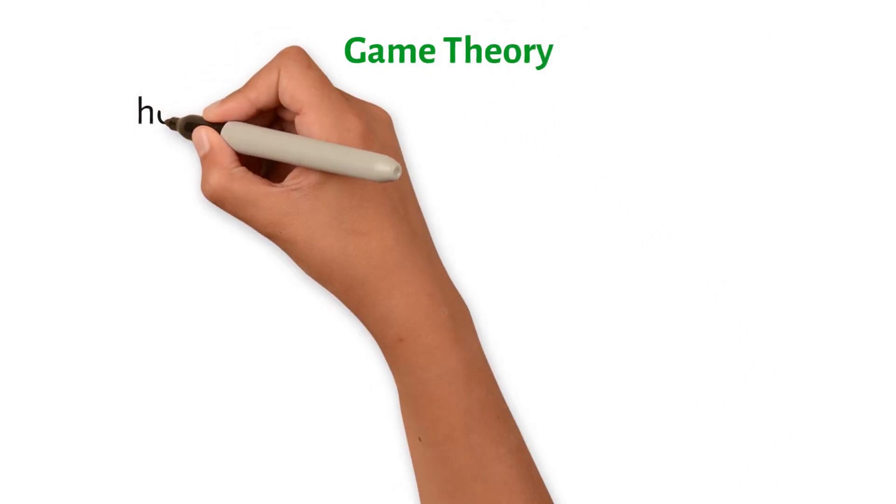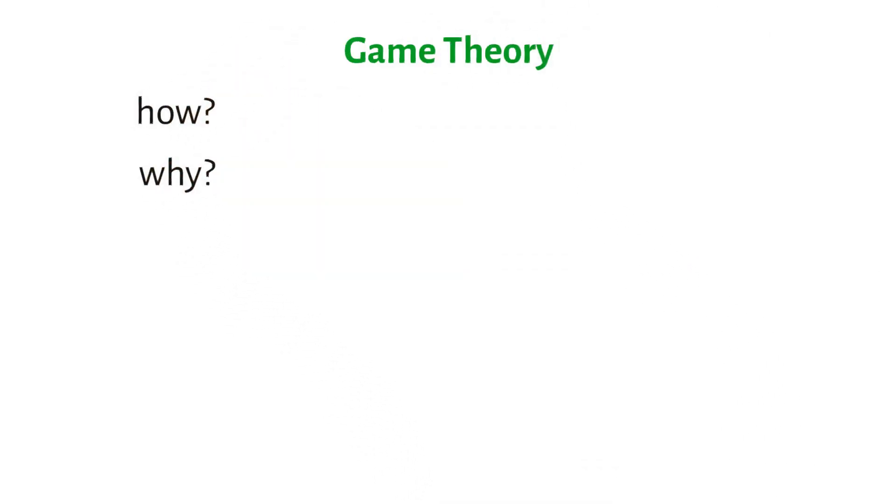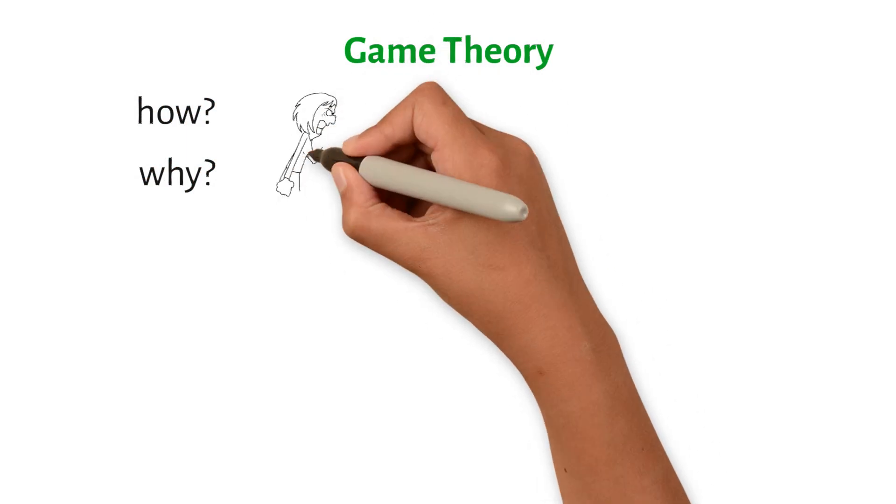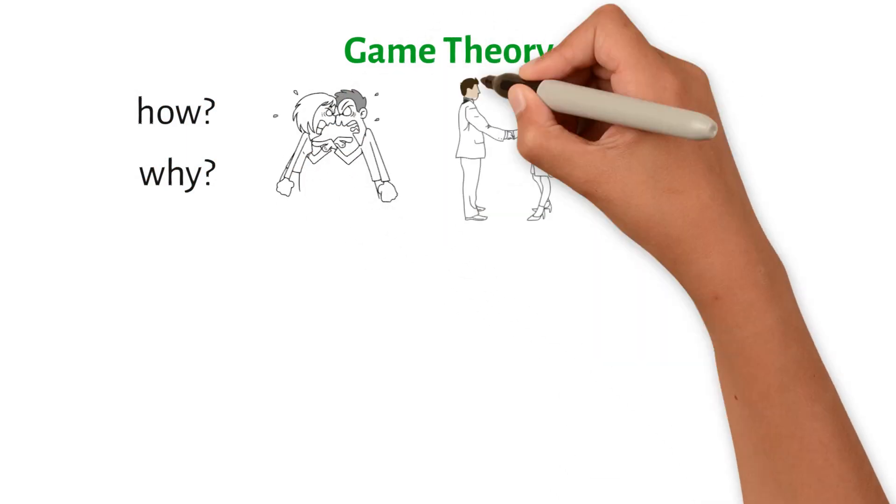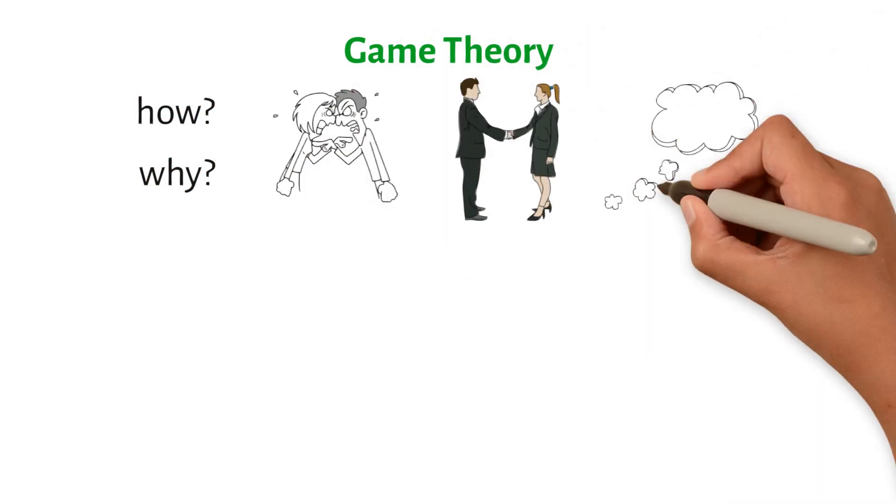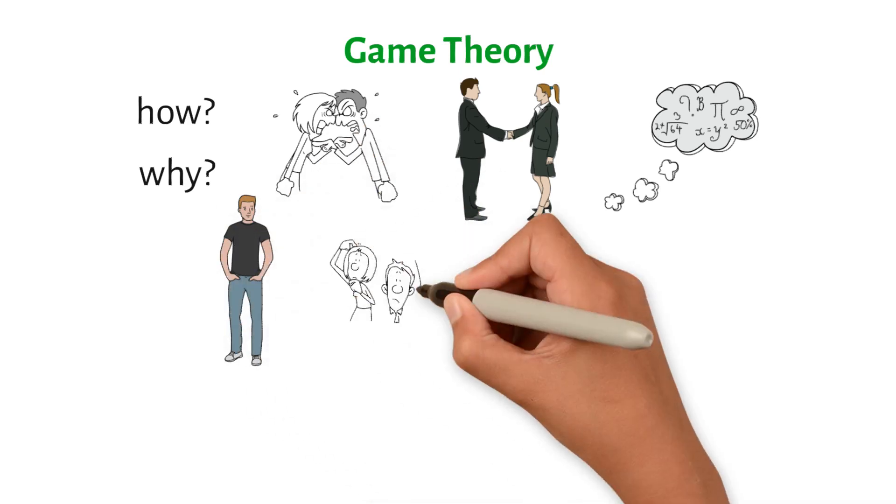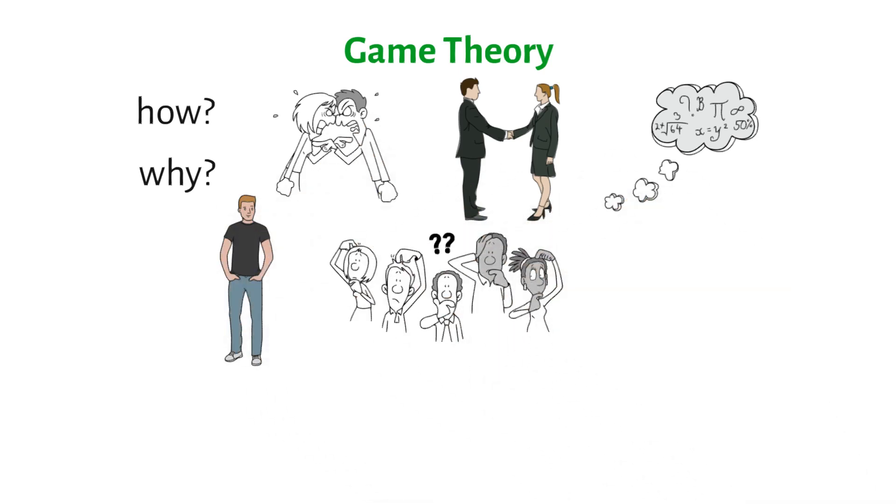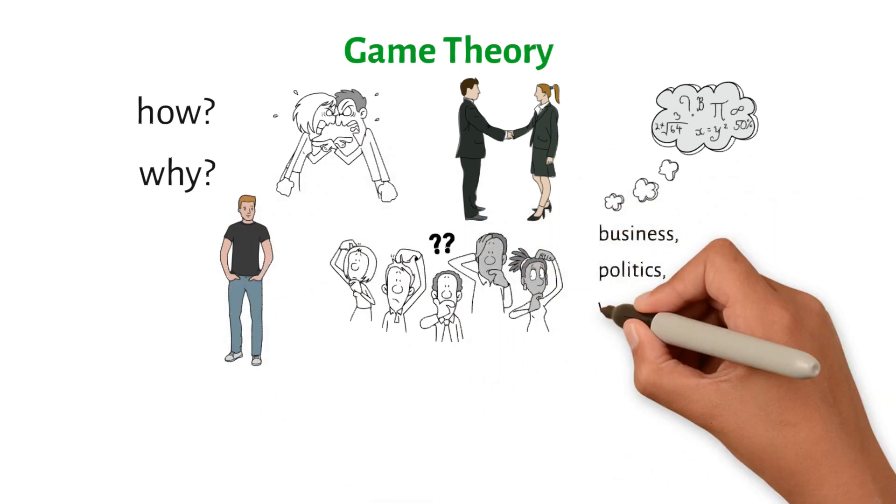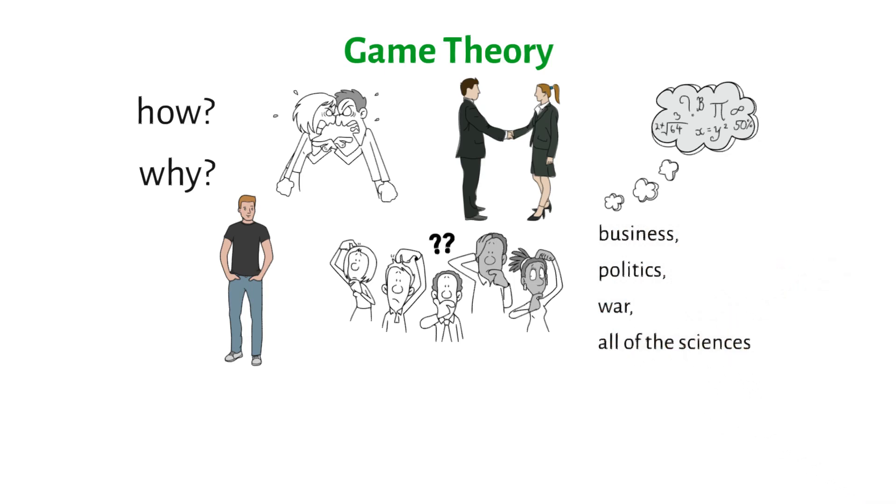Game theory is the study of how and why people decide what to do. It's the official study of how people disagree and work together. It is a branch of mathematics that looks at how to act in competitive situations where one person's decision has a big effect on what the other people do. Game theory has been used in business, politics, war, and all of the sciences.